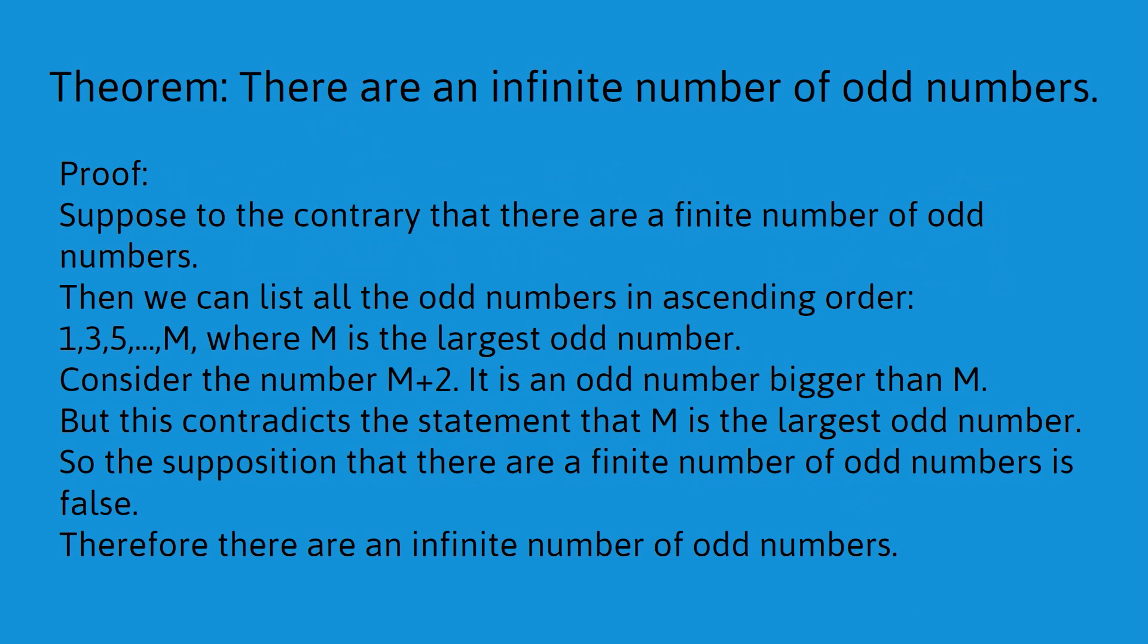1, 3, 5, all the way up to m, where m is the largest odd number. That immediately follows from our supposition. Then we make another logical statement. Consider the number m plus 2. It is an odd number. It must be odd because it's 2 more than m, which is odd. And it's bigger than m.